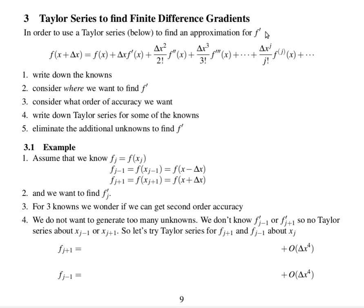We are going to find an approximation for f dashed at x. To use a Taylor series to find a finite difference gradient, first of all we write down the things that we know, we consider where we want to find f dashed, consider what order accuracy we want, and then we write down a Taylor series for some of the knowns, centred about another of the knowns, and then we try to eliminate the unknowns to find the thing we want.